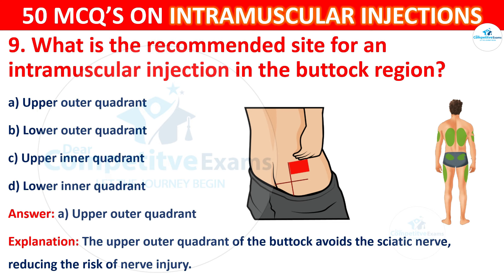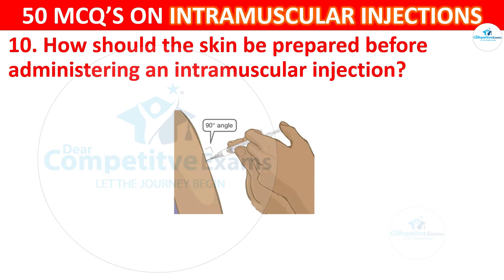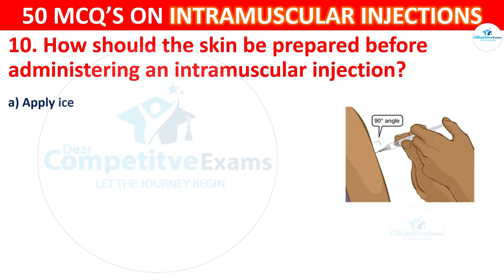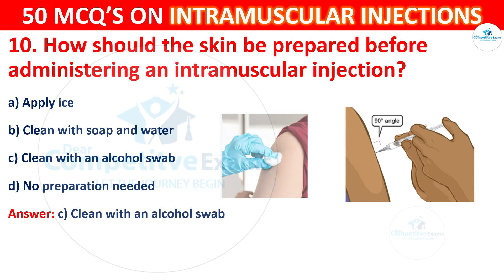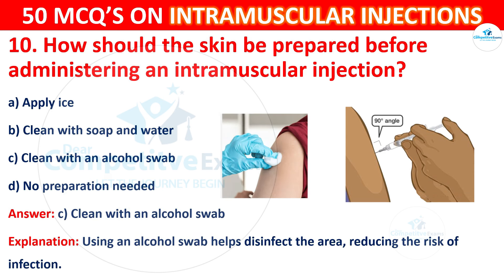Question 10: How should the skin be prepared before administering an intramuscular injection? Options are: apply ice, clean with soap and water, clean with an alcohol swab, or no preparation needed. The correct answer is C, clean with an alcohol swab. Using an alcohol swab helps disinfect the area, reducing the risk of infection.